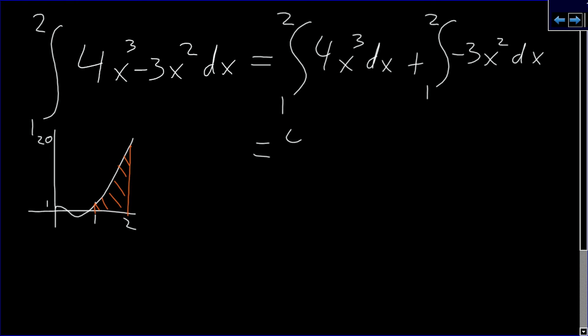which equals 4 times the integral from 1 to 2 of x cubed dx minus 3 times the integral from 1 to 2 of x squared dx.